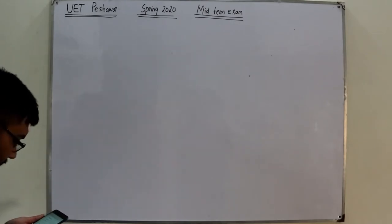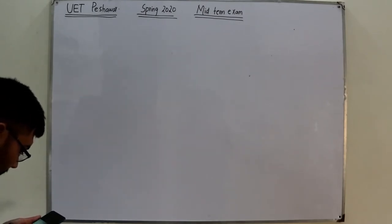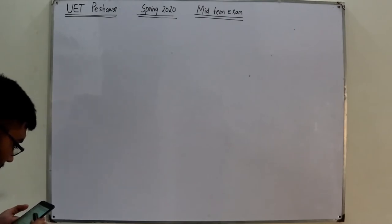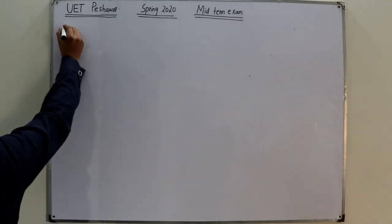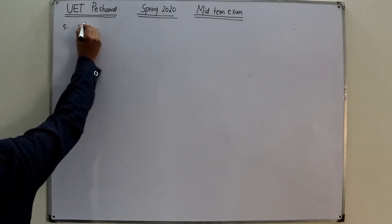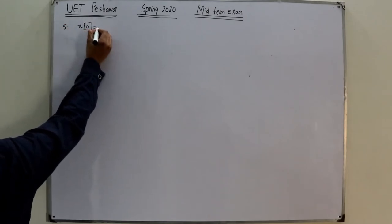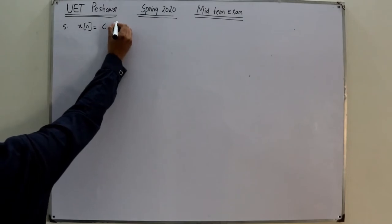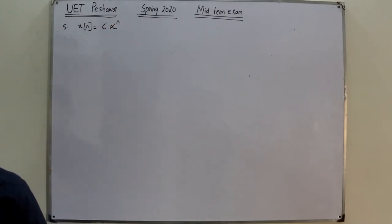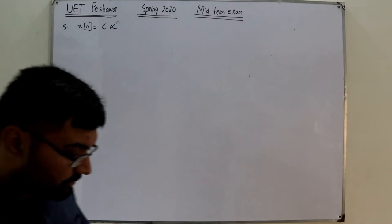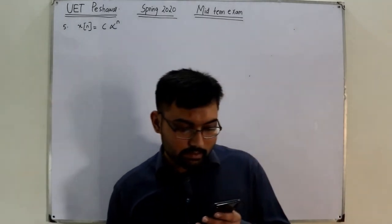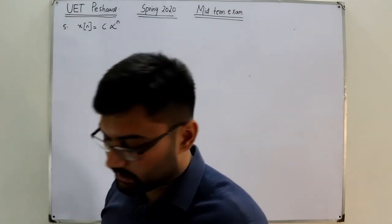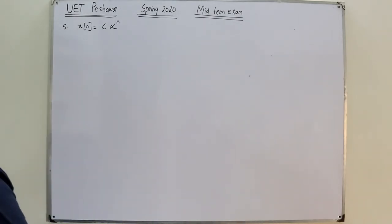Question 5: x(n) = c·αⁿ. We are asked which conditions represent a double-sided growing exponential signal.